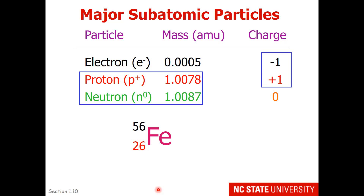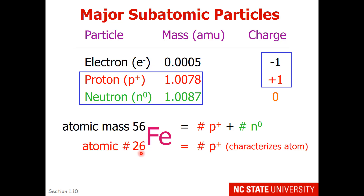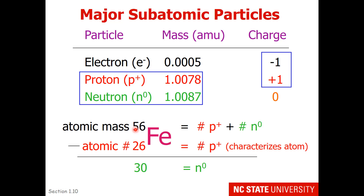Let's take a look at an iron atom. An iron atom has two numbers associated with it. One is the atomic mass, which is the number of protons plus neutrons. This particular iron atom has an atomic mass of 56. The other number is the atomic number, which is 26 for iron. This is the number of protons, and it characterizes that particular atom — anywhere you find iron, it will always have 26 protons. If you need to know the number of neutrons, you take the atomic mass and subtract the atomic number, which gives you 30 neutrons for this iron.